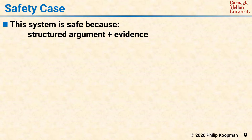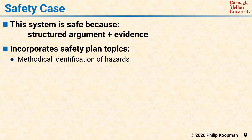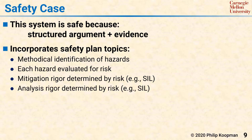Thus, the safety case will incorporate written descriptions and evidence for at least the following: a methodical identification of hazards, an evaluation of each hazard to determine its risk, appropriate mitigation and rigor used as determined by the risk's SIL, and an analysis, testing, or other means to ensure that mitigation was actually completed successfully.